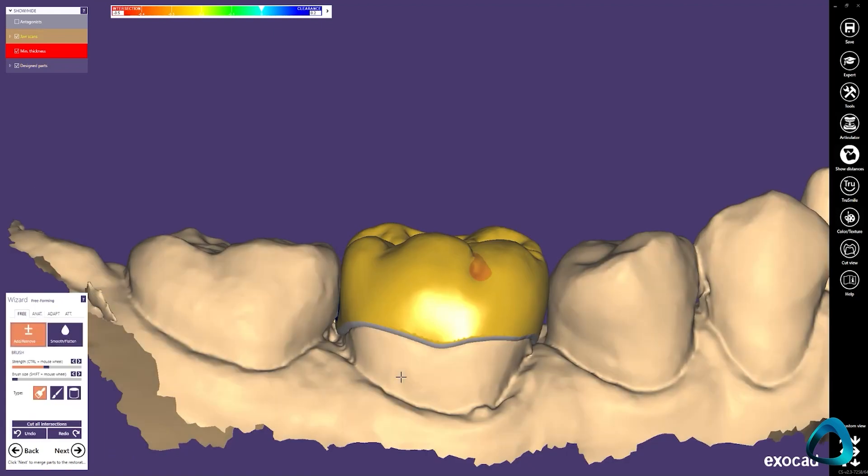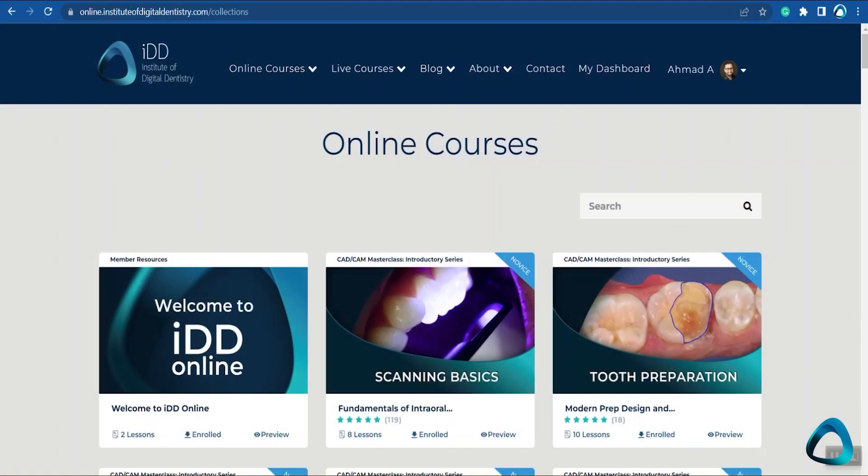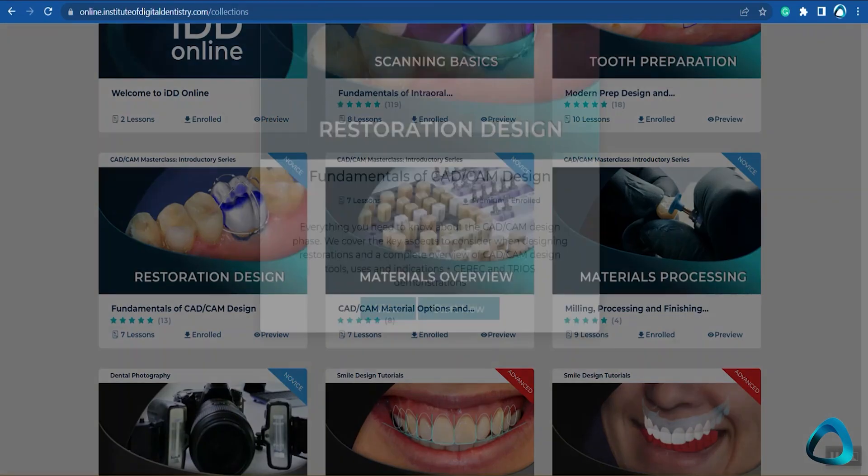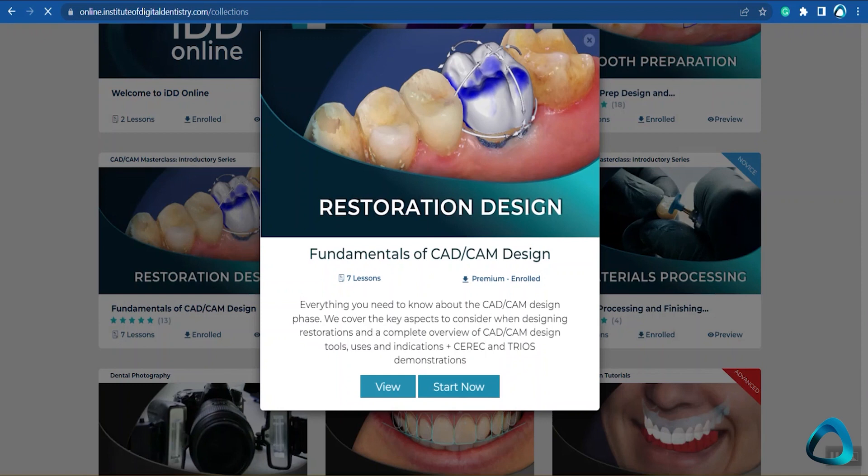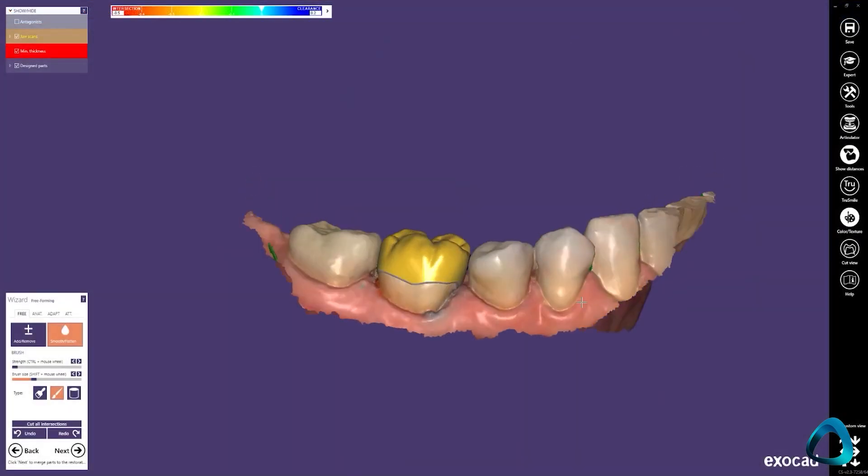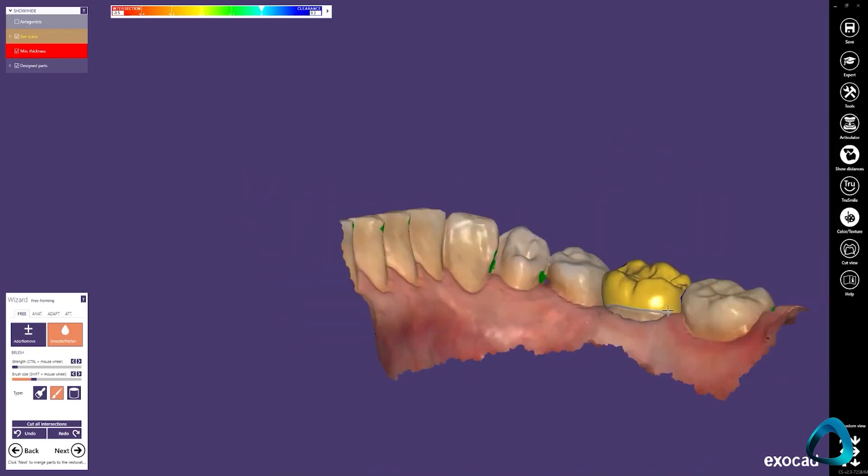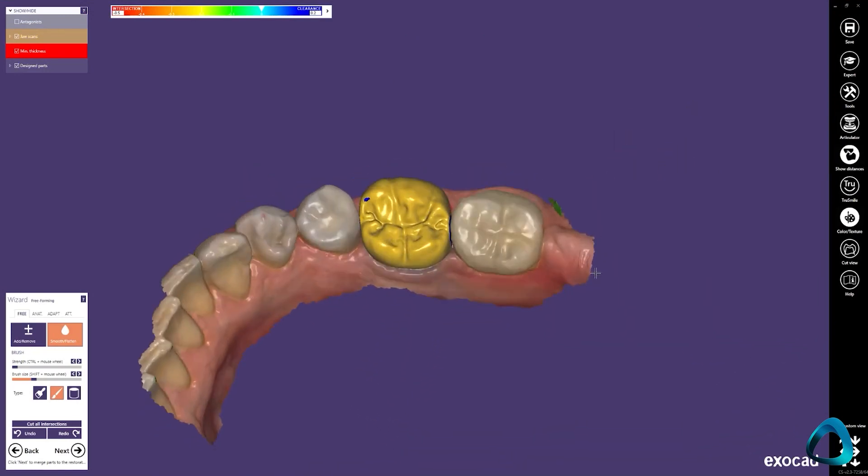Finally, it's vital to check the minimum thickness and ensure that you have not breached the desired material's minimum thickness, as this will compromise longevity. If you want some detailed training on CAD designing, we have our fundamentals of CAD CAM design course available in our IDD online membership. Once you are happy with the design, check your final restoration from all directions before proceeding in the workflow.